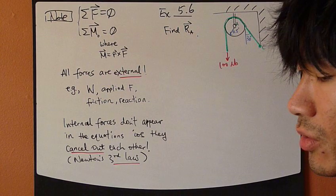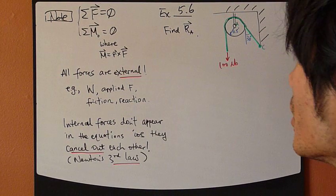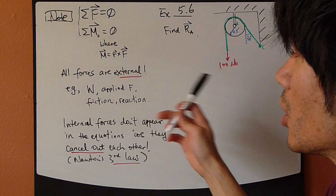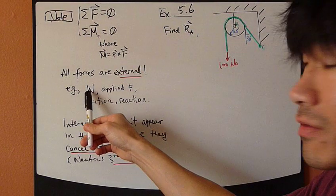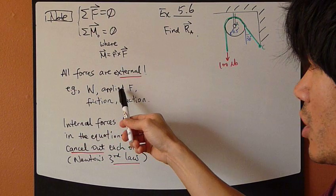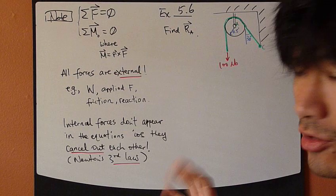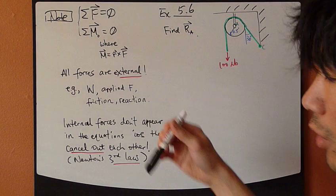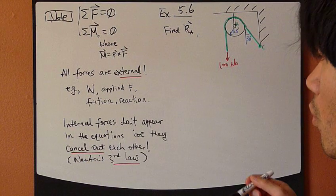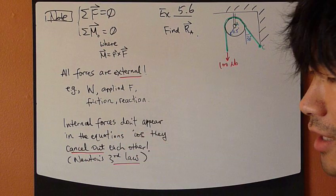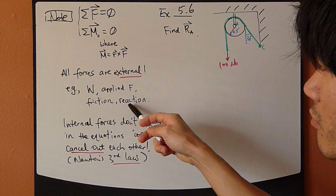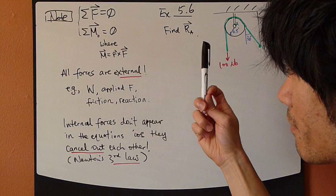External forces include weight, for example, due to the mass of the object, any externally applied force - let's say you're trying to push something, you're applying force. Or force in a cable, tension. You're trying to pull the cord, that's tension force, also applied force. Friction, so any kind of contact surface we have friction, and reaction forces at supports, and so on.